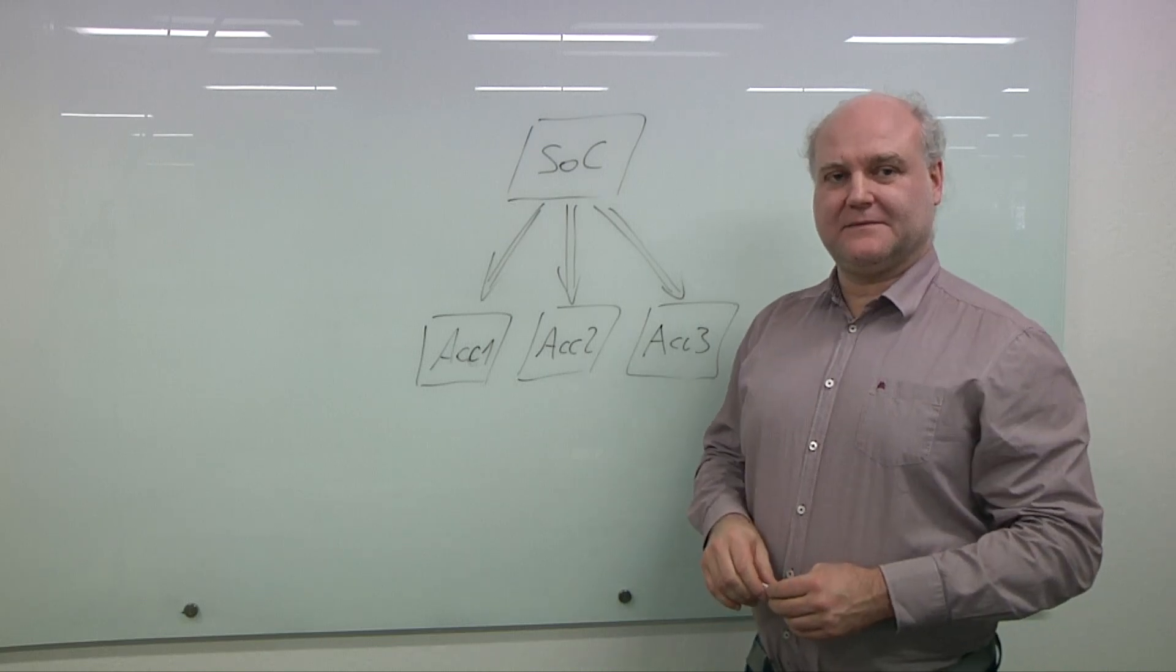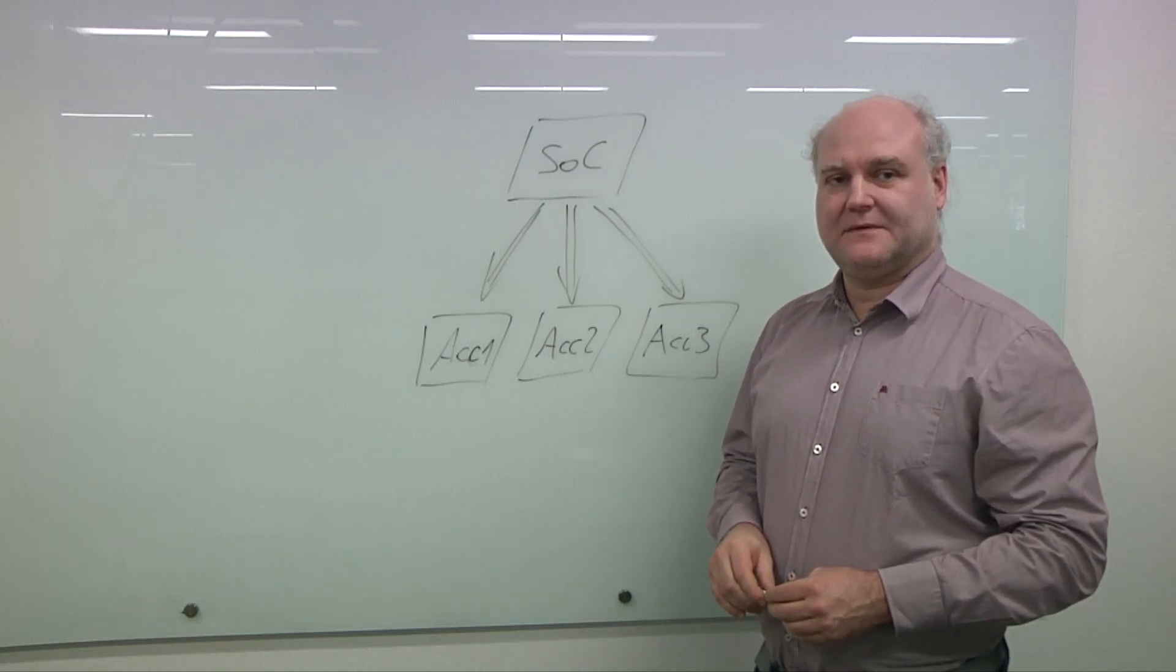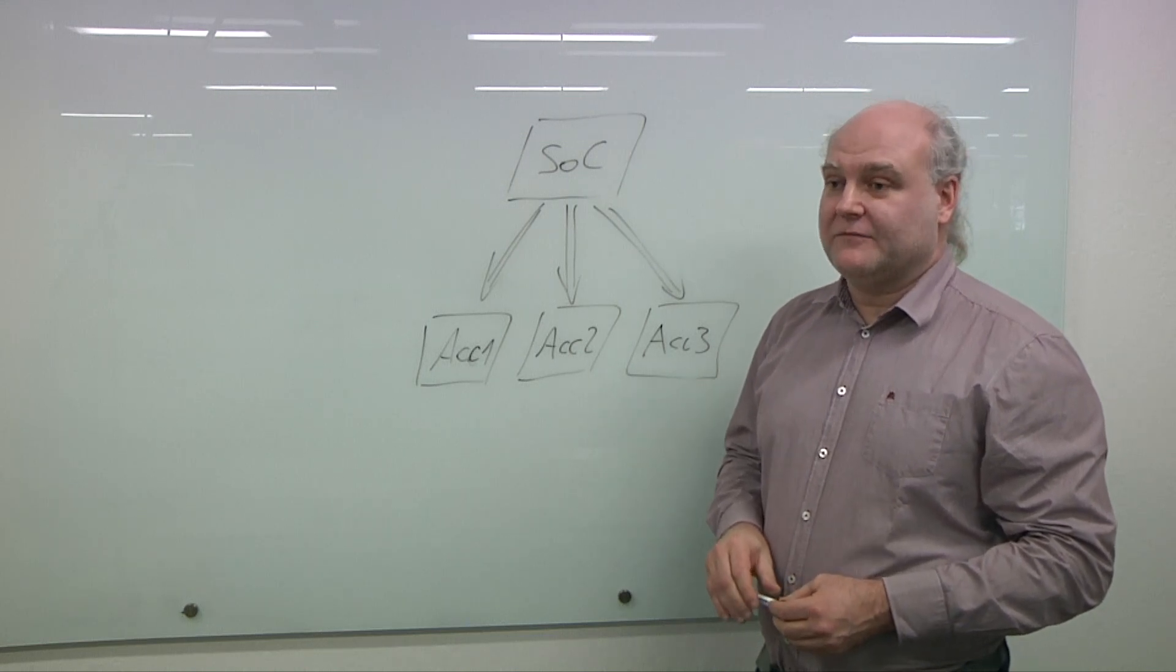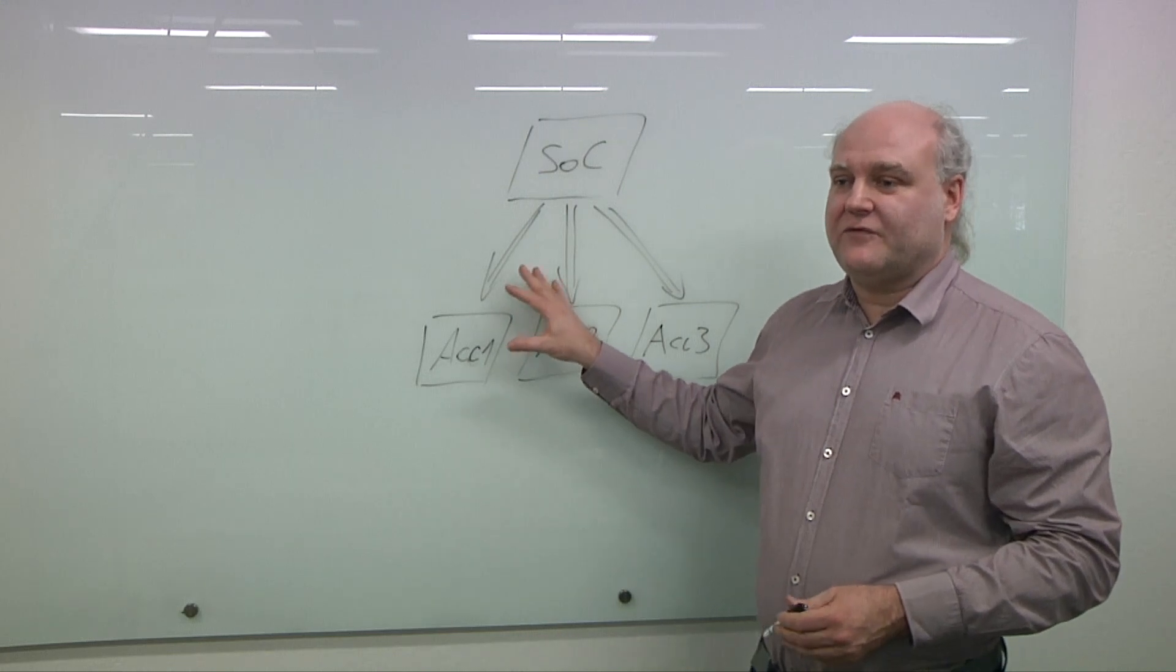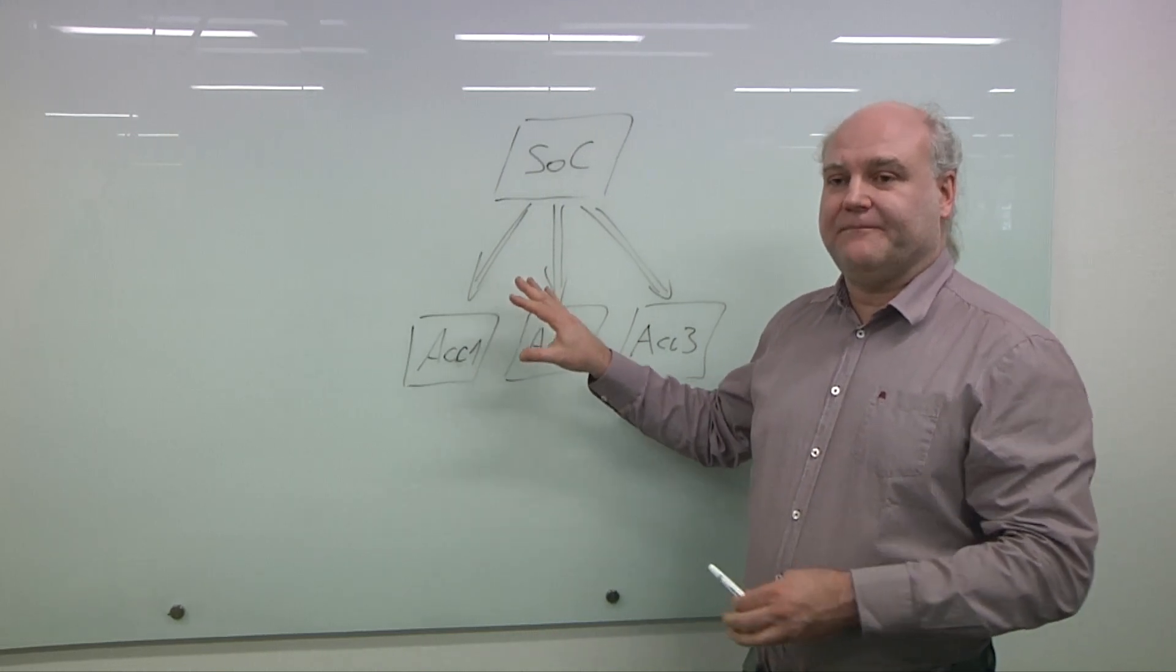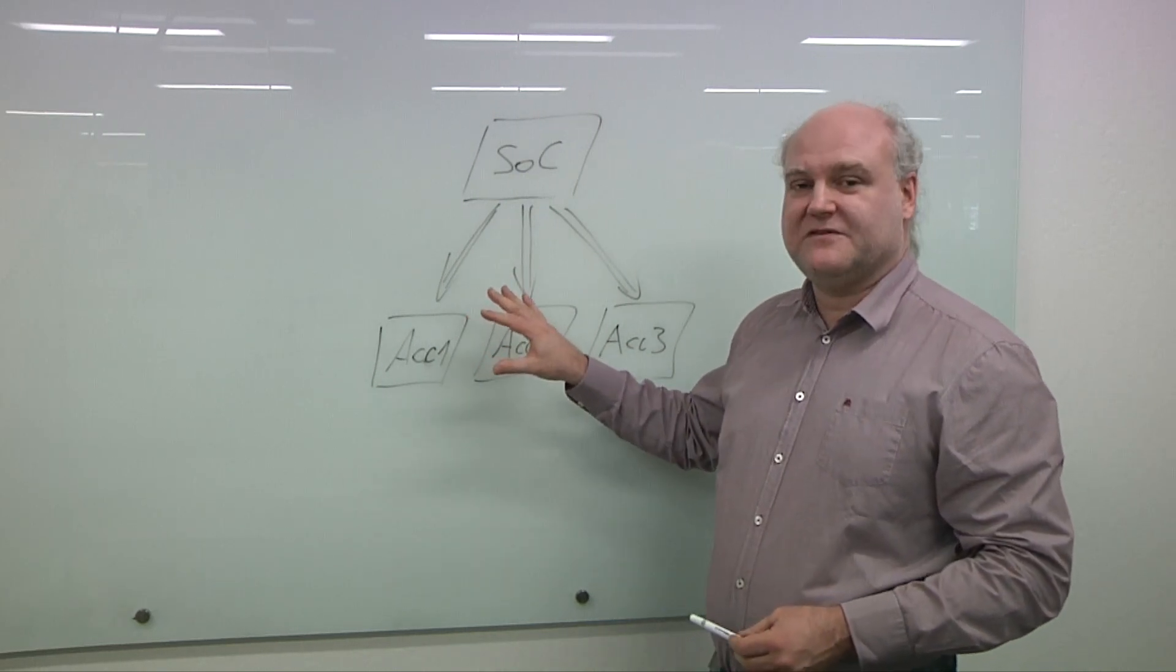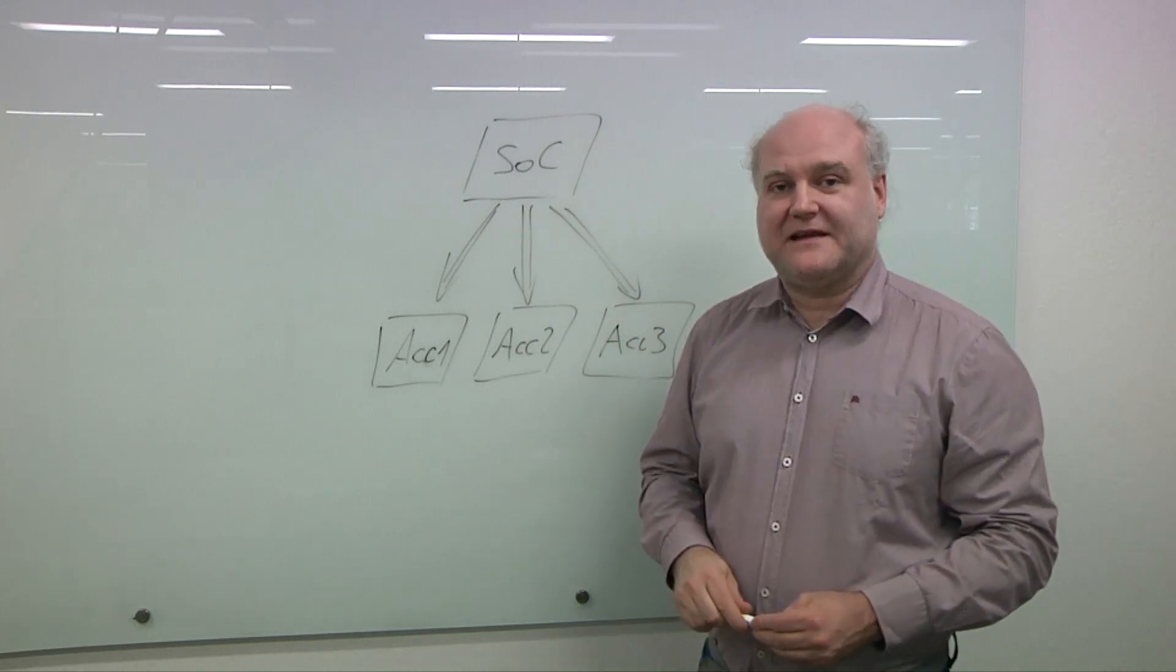This becomes a whole different problem. As you disaggregate this SOC, now you have these partitioning problems over distance, potentially, that you didn't have before. Yes, right. So we definitely have new problems with the disaggregation. We have to find functionality that makes sense to disaggregate. It must be a functionality that is often reused or where we really need power efficiency to get the whole system approach makes sense.